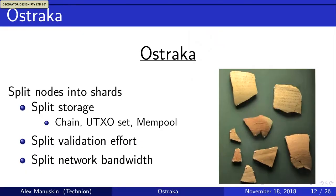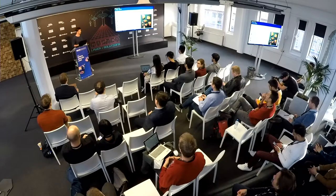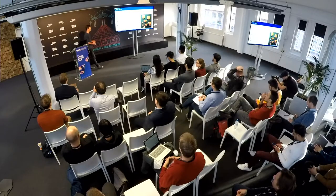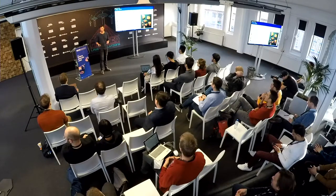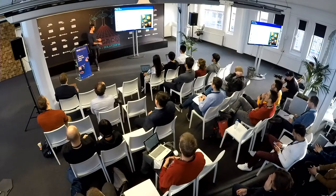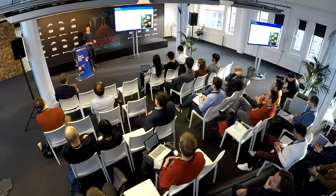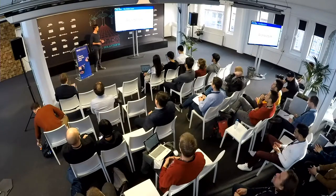This is where our solution, Ostraka, comes in. The word 'ostraka' means shards of ancient pottery — we basically wanted a different word that means sharding. The challenges with building such a system are: we need to split all storage, split all data structures needed to keep a blockchain, split the validation effort, and split the network bandwidth between the shards we are building.